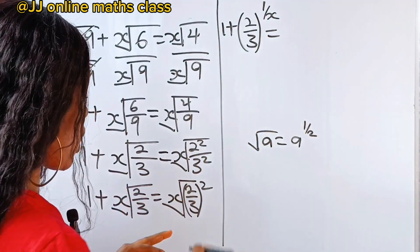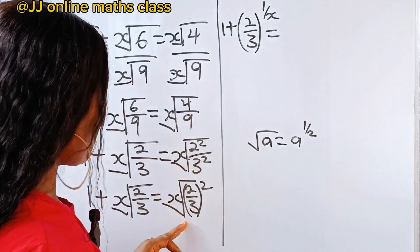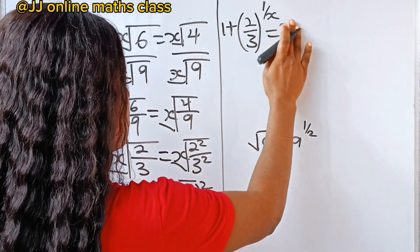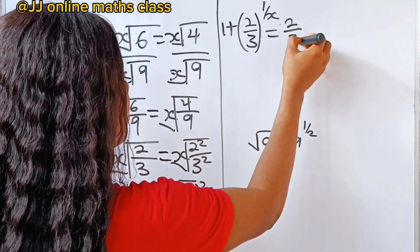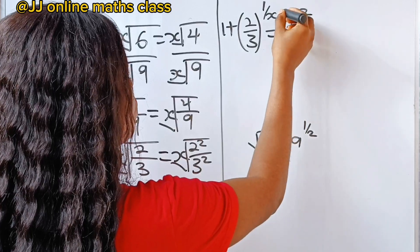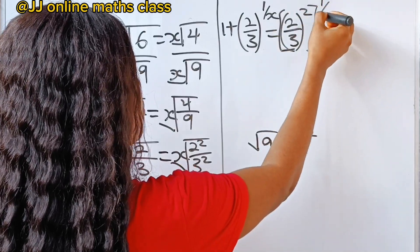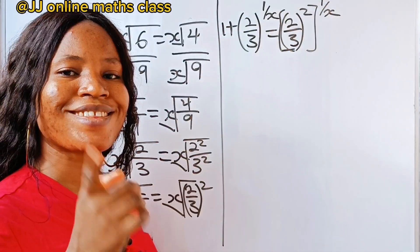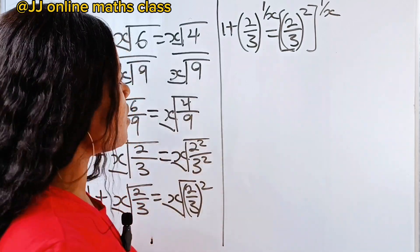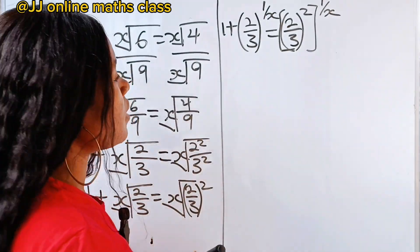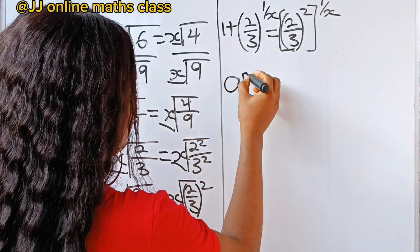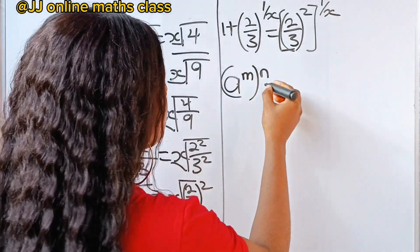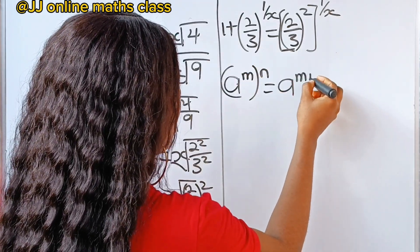Is equal to — we are going to do the same thing on the right-hand side. If we do that, we are going to have 2 over 3 raised to the power of 2, raised to the power of 1 over x as well. Now, recall this law of indices or exponents that states that a to the power of m, raised to the power of n, is equal to a to the power of mn.